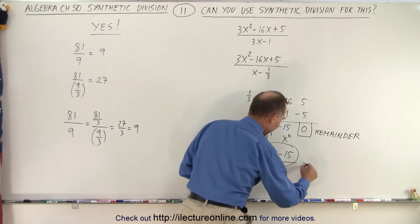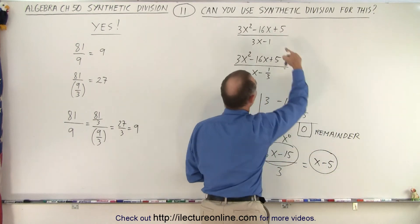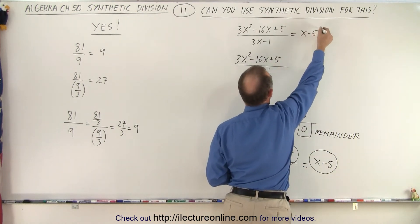So when I then divide everything by 3, I get x minus 5. And that is the result of this. This is equal to x minus 5.